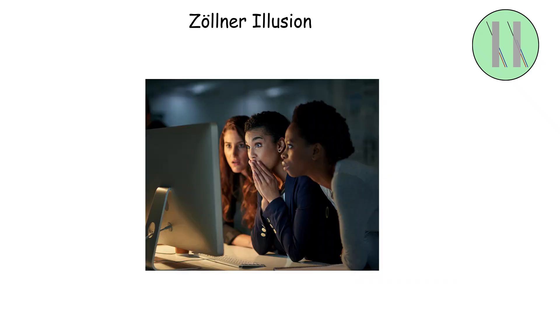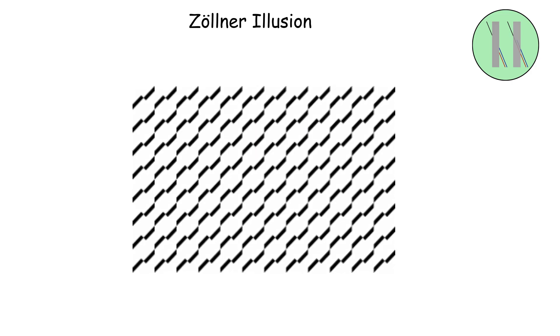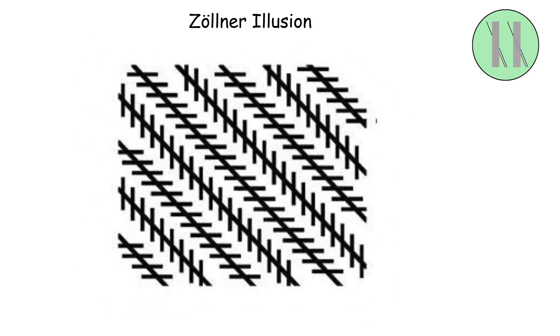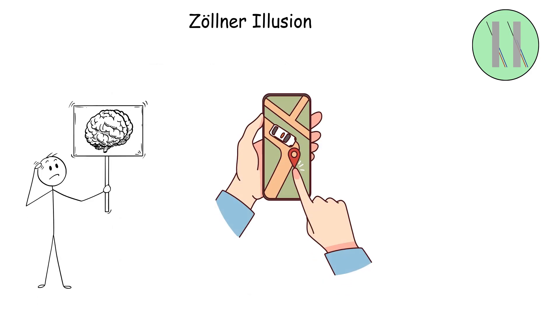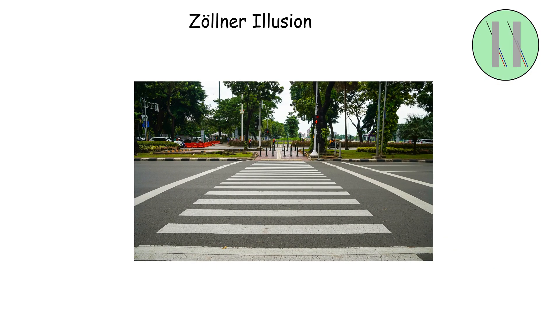Here's what's really happening. Those diagonal crosshatches mess with your brain's ability to judge angles and orientation. Your visual system tries to process the angle of the short lines and accidentally applies that angle information to the long, parallel lines. It's like your brain is a GPS that gets confused by side streets and thinks the main road is curving when it's actually going straight.